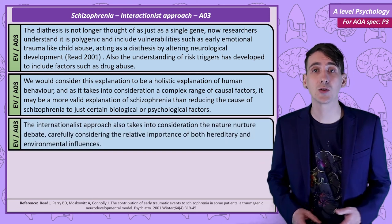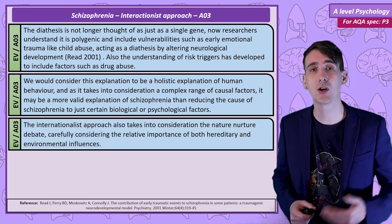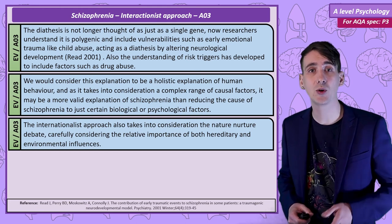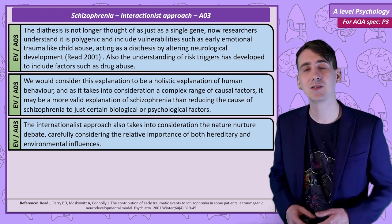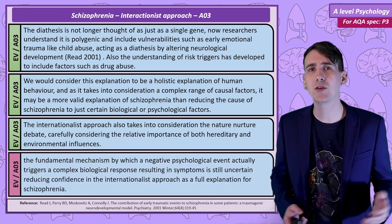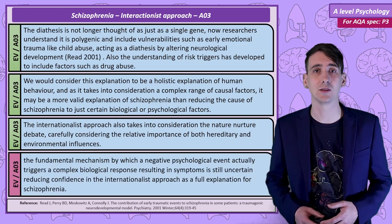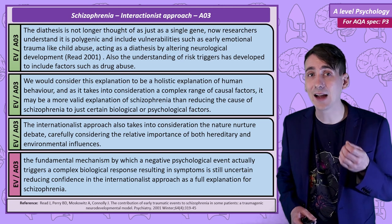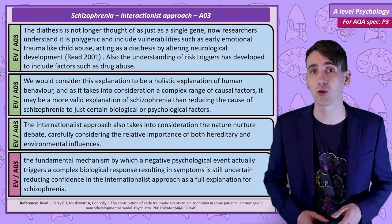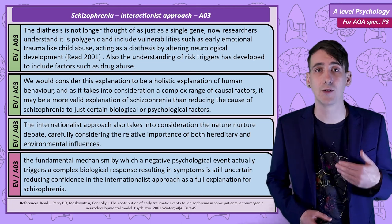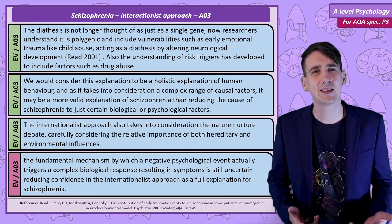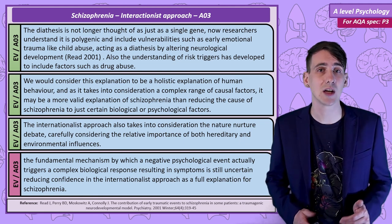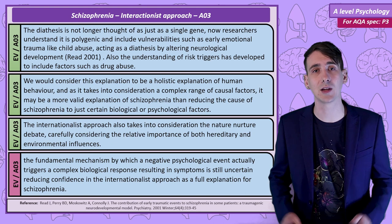The interactionist approach also takes into consideration the nature-nurture debate, carefully considering the relative importance of both hereditary and environmental factors. However, it's not all positive. The fundamental mechanism by which a negative psychological event actually triggers a complex biological response resulting in symptoms is still uncertain, reducing confidence in the interactionist approach as a full explanation of schizophrenia.